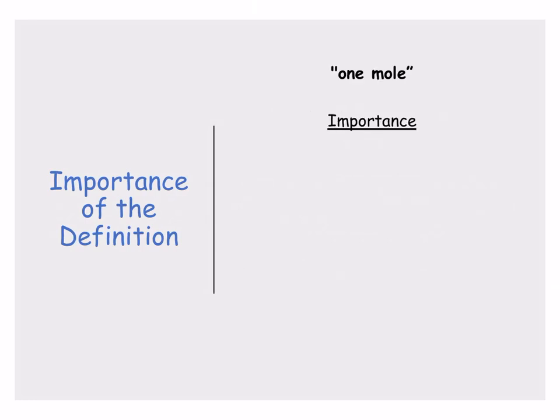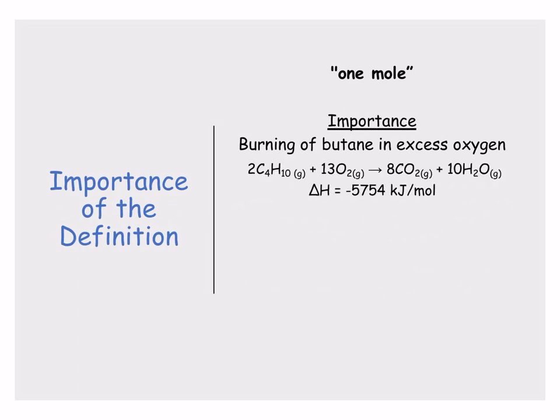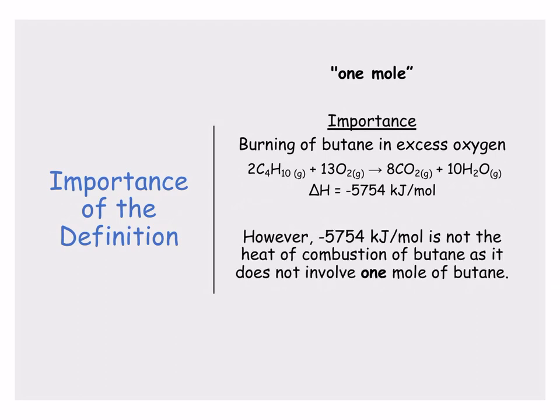The one mole definition is really important. If we look at the combustion of butane in excess oxygen, equation one at the top shows two moles of C4H10 (butane) and 13 moles of O2, giving a delta H of negative 5,754 kilojoules per mole. Since that's for two moles, the heat of combustion for one mole is simply half of that — you just halve the whole equation to get one mole of butane.